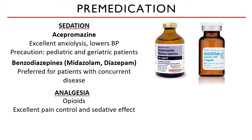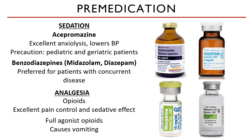Opioids are the usual go-to drug since they provide adequate pain control and their sedative effect has a fast onset. However, full agonist opioids are used with caution since they can cause vomiting in some patients. Examples of full agonist opioids include morphine, methadone, hydromorphone, and fentanyl — these are just a few examples.